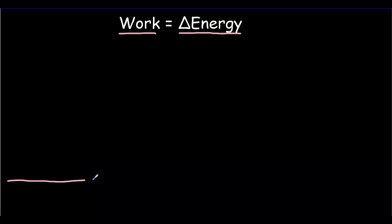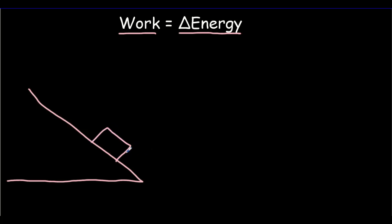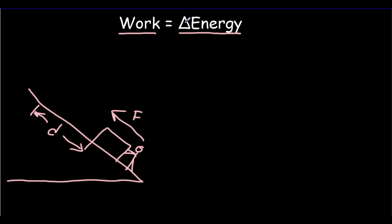Let's imagine a situation where we've got an inclined plane, and we've got a block on that inclined plane, and we're going to push that block with a force F. Let's say we move it up the incline by a distance D. The work done would be equal to F times D. Now there are a number of different energy transformations that can occur as a result of that work.